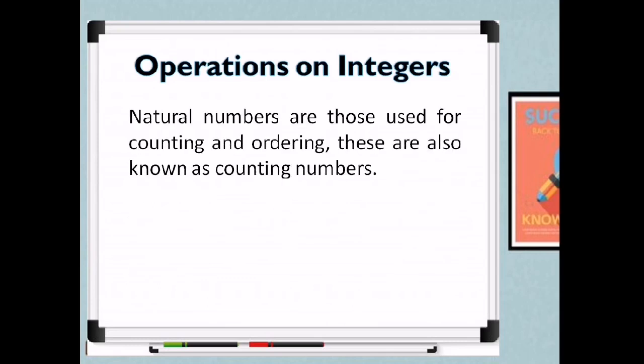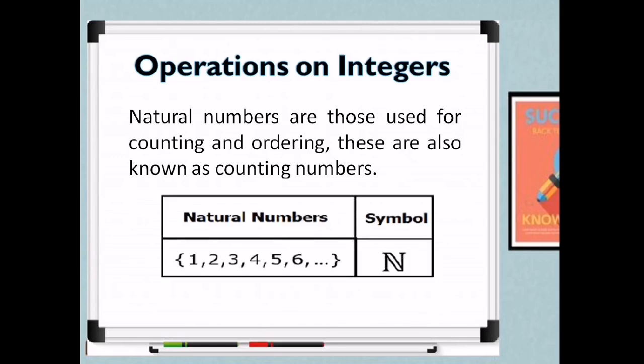When we say natural numbers, these are numbers used for counting and ordering, also known as counting numbers. These are the first things taught to children — counting. The symbol of natural numbers is N, and they are: 1, 2, 3, 4, 5, 6, and so on.